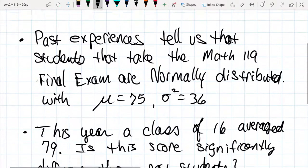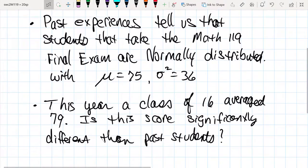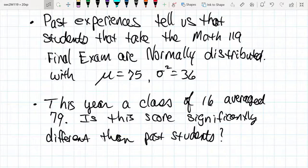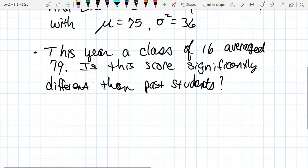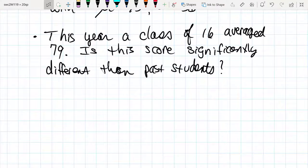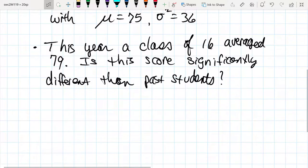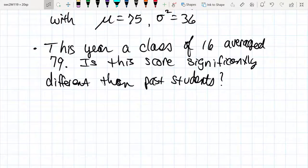Past experience tells us that students who take the Math 119 final exam are normally distributed with a mean of 75 and a variance of 36. This year, the class of 16 students averaged 79. So is this score significantly different than past students?